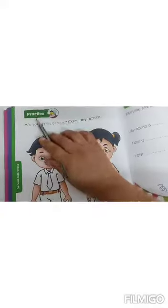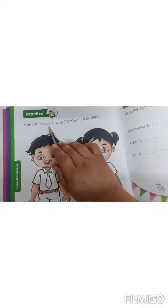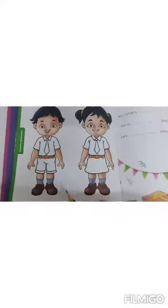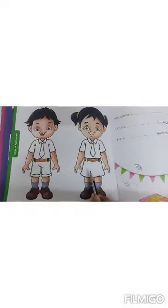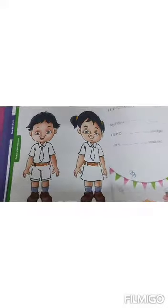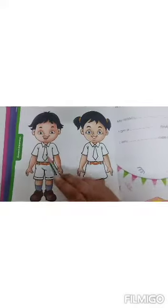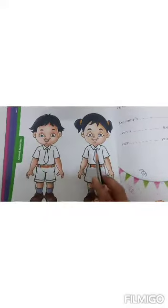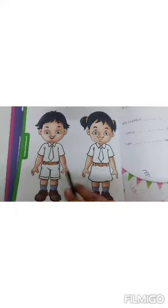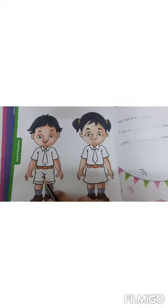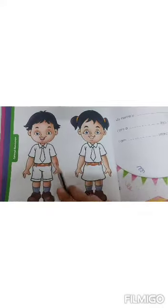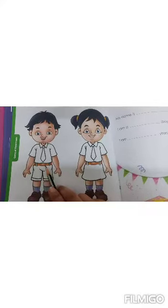See, this is practice. Are you a boy or a girl? Color the picture. You can see here, the picture of a boy and a picture of a girl is given here. What you will do, children, if you are a boy, then you will color this picture. And if you are a girl, then you will color this picture. Do not color both the pictures. According to your gender, you will color the picture.